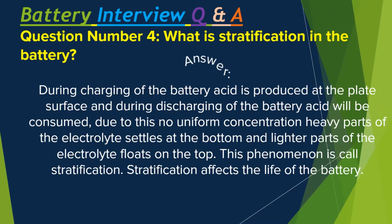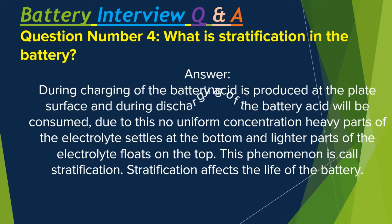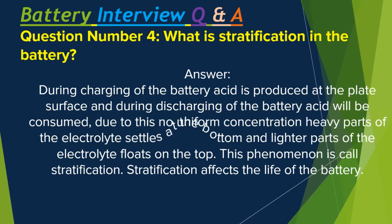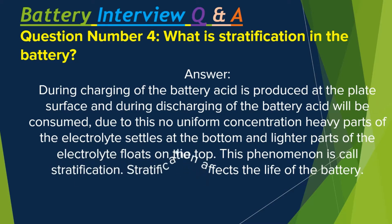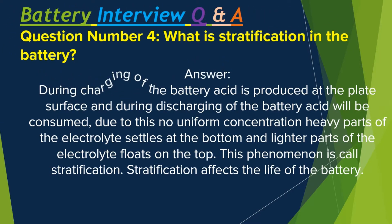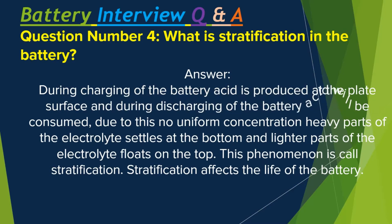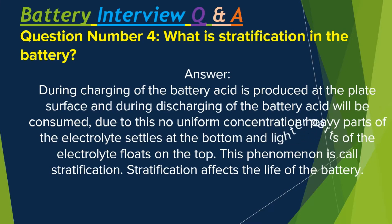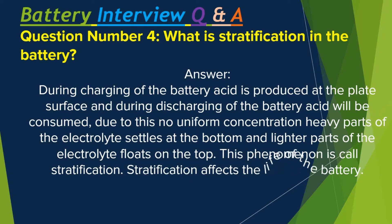Question number four: What is stratification in a battery? During charging of the battery, acid is produced at the plate surface, and during discharge of the battery, acid is consumed. Due to this, there is no uniform concentration — heavier parts of the electrolyte settle at the bottom and lighter parts of the electrolyte float on the top. This phenomenon is called stratification.